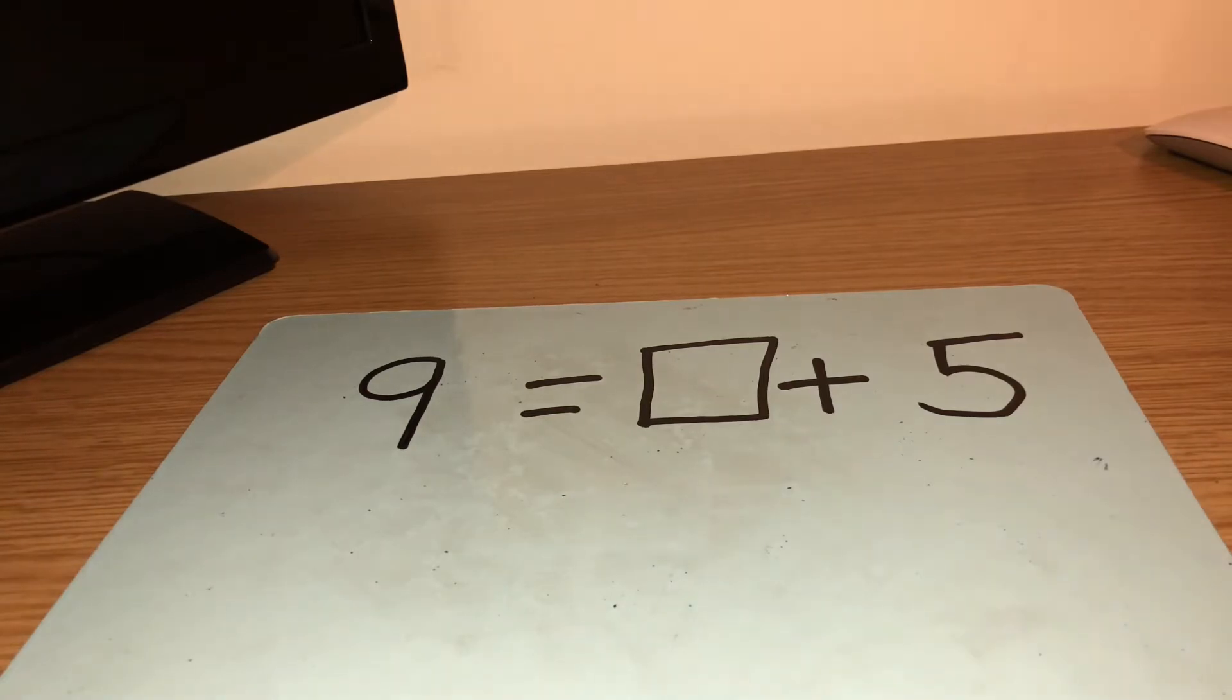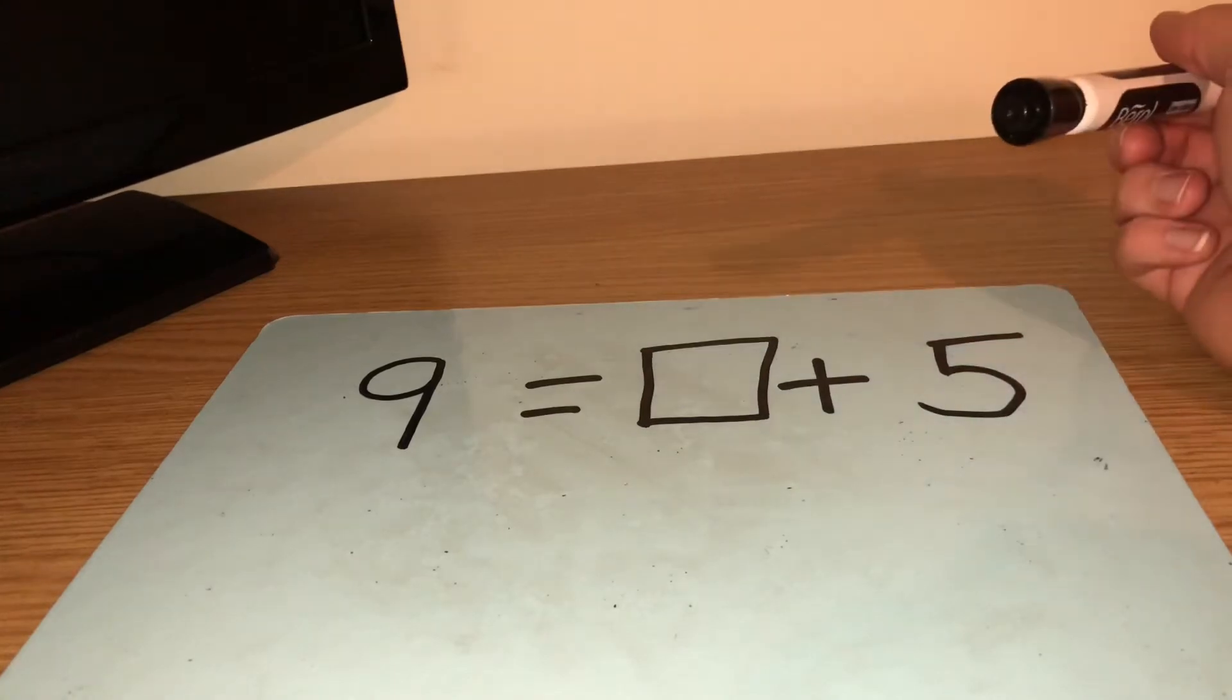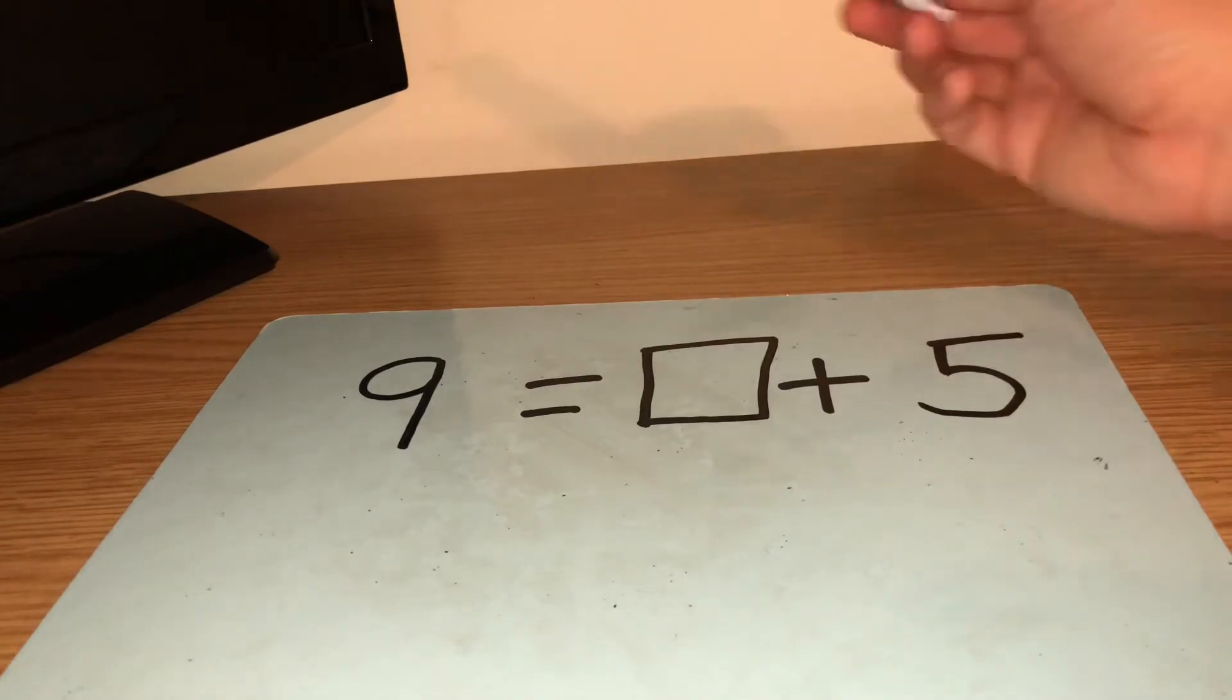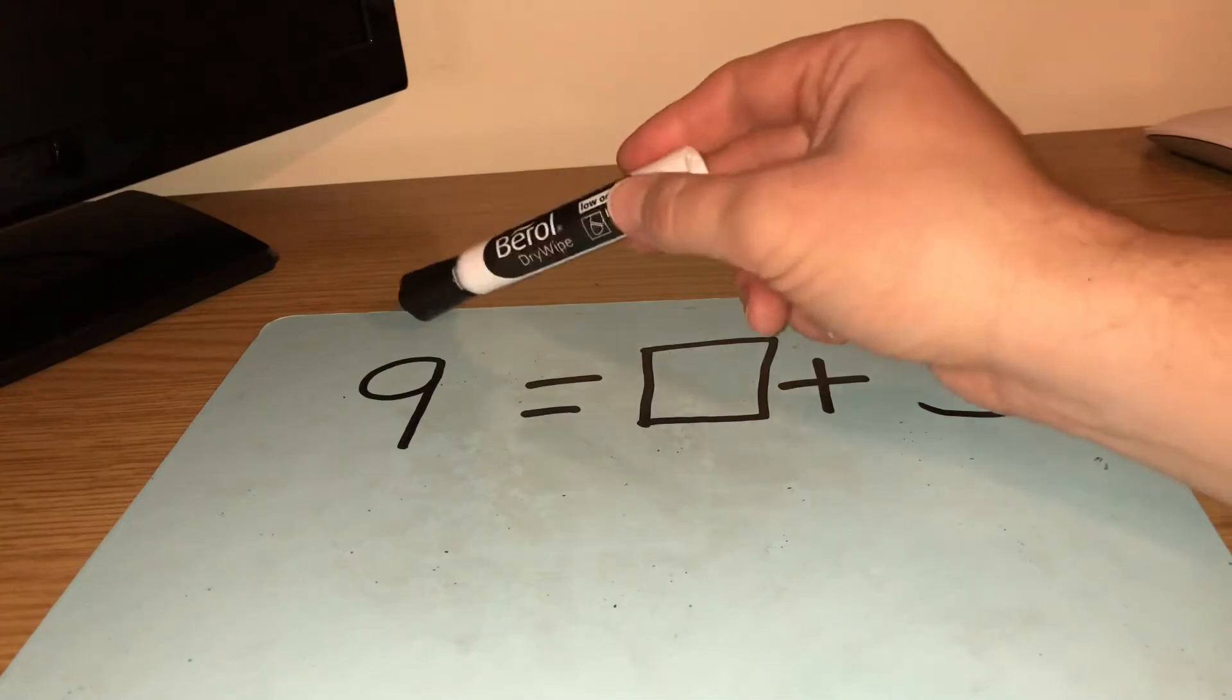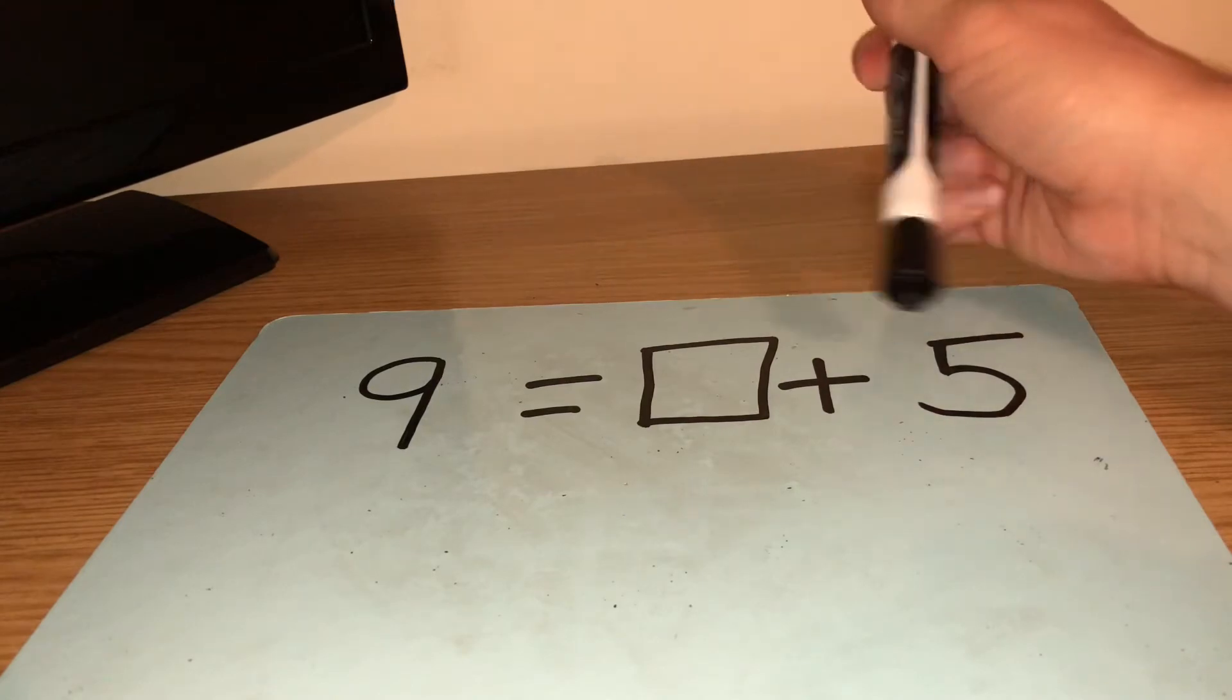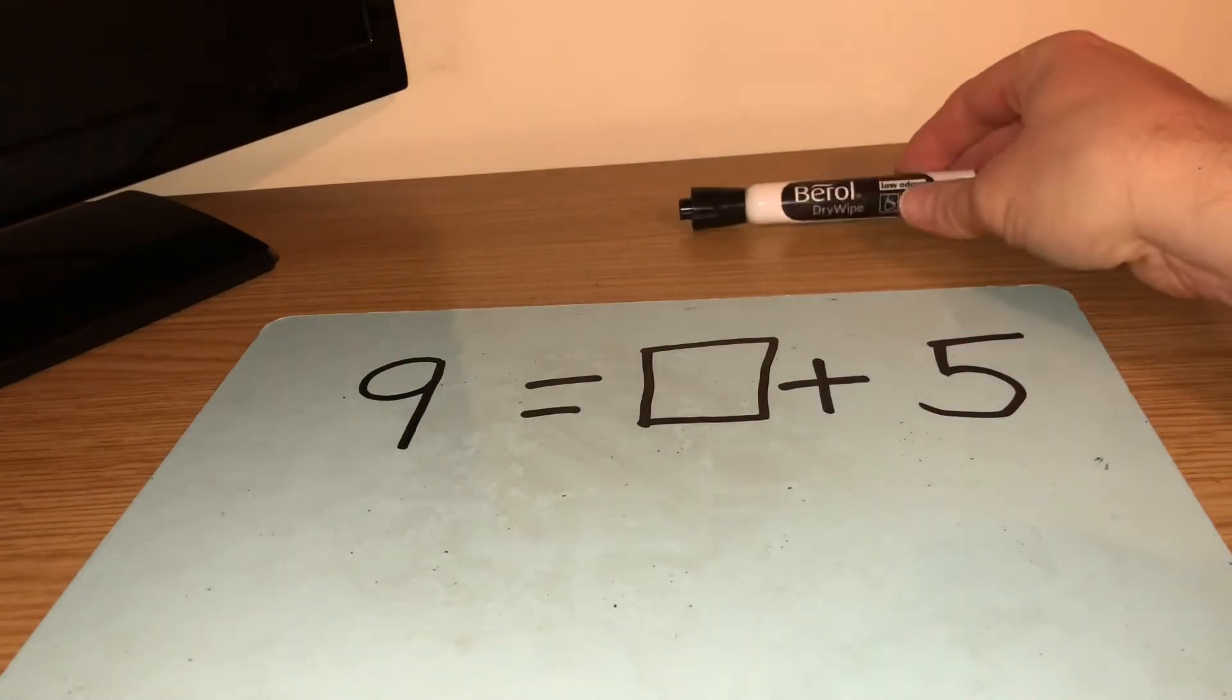Now, can you see we've got this box here, this square? And it's because there's a missing number and we've got to work out what this number needs to be. Can you see we've got 9 and we're saying that 9 is the whole, the whole thing and it equals something plus 5. So 5 and something else is the same as the number 9.